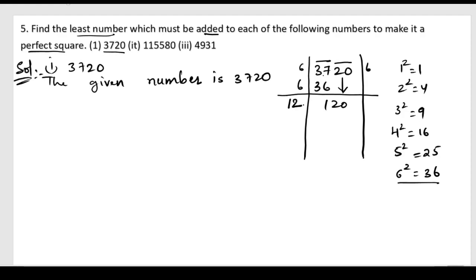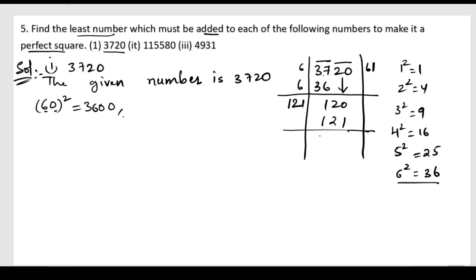We write 6 again, so 6 plus 6 is 12. The nearest number to 120 in the 12-times table: writing 1 gives 121. So the lowest divisor here gives 121. Let us write down the square of 60: the square of 6 is 36, so 60² = 3600. Next, the square of 61 is 3721.